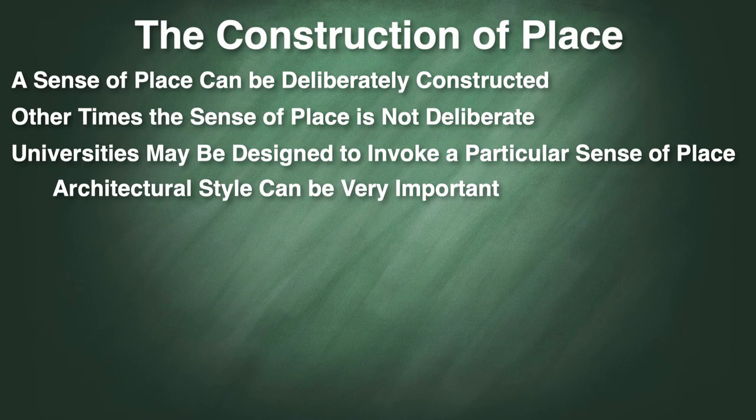You can also think of constructing a sense of place for people who have never been to a particular place. Sometimes this is done to deliberately manipulate people. For instance, if you're trying to convince a population to go to war, then you might try to get the population to associate the other place as hostile or aggressive, trying to imbue the population with a certain meaning and perspective about a particular place that might encourage or make more permissible hostile actions against them.